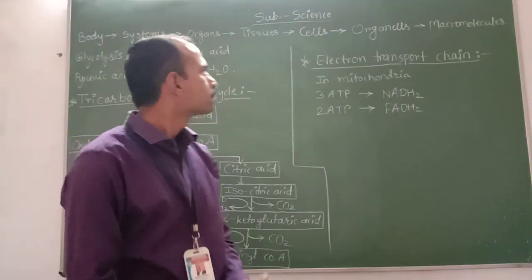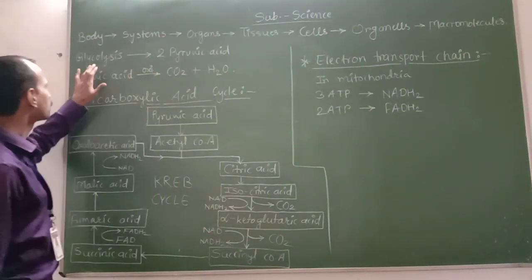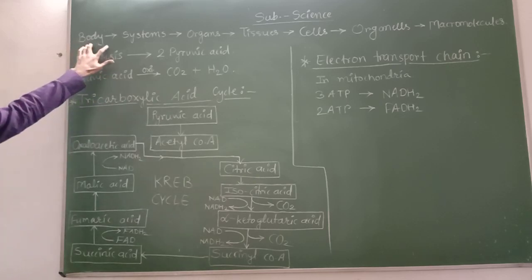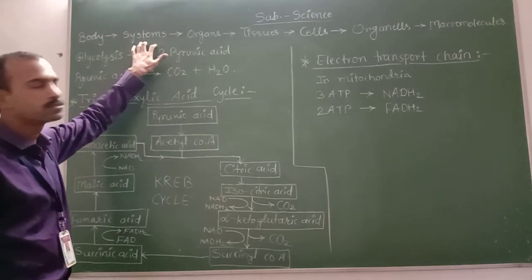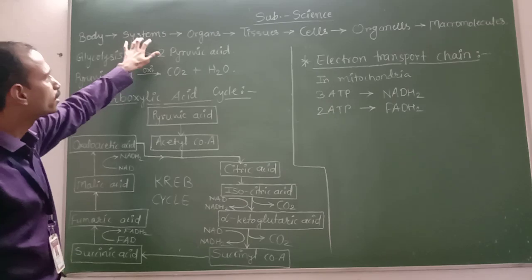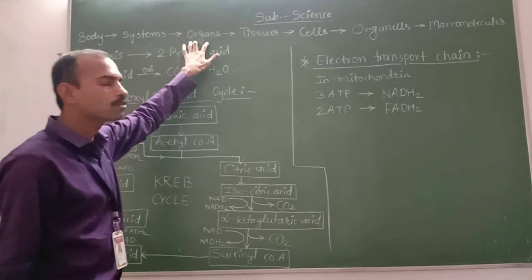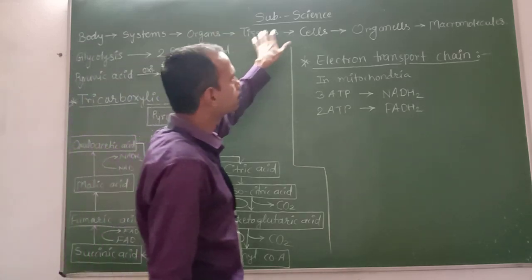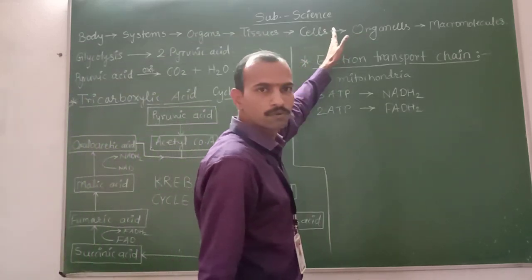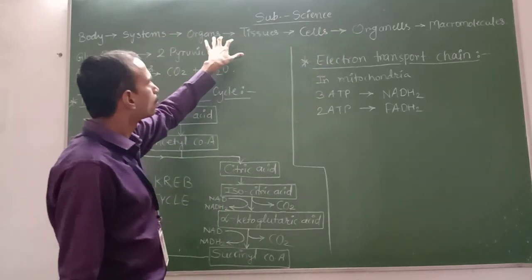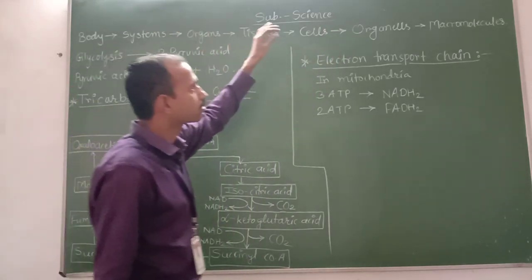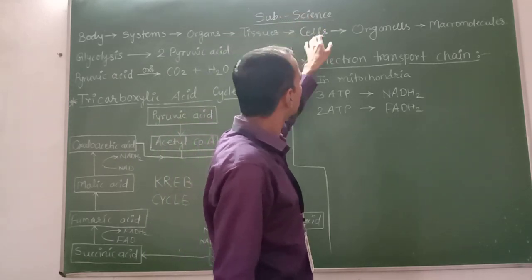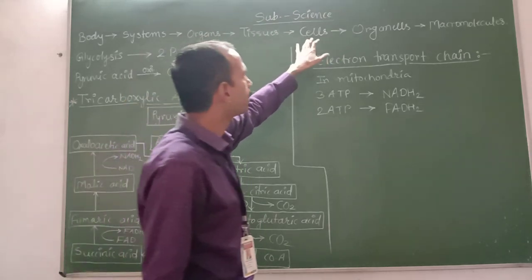Good morning students. In a previous video we discussed the process of glycolysis. Our body is made up of many organ systems; each organ system is made up of various types of organs, each organ is made up of tissue, tissue of cells. Up to cells it is a very common process, but now in this chapter we have to learn about the remaining portion — the internal part of that cell.